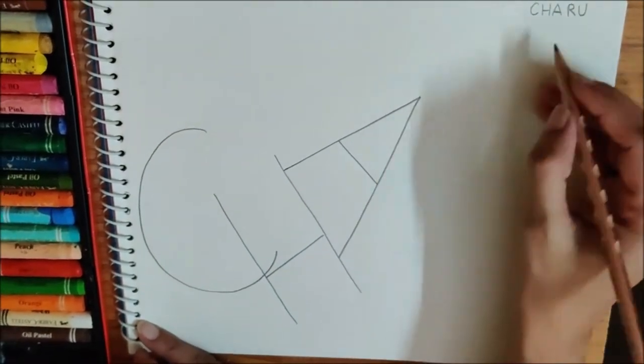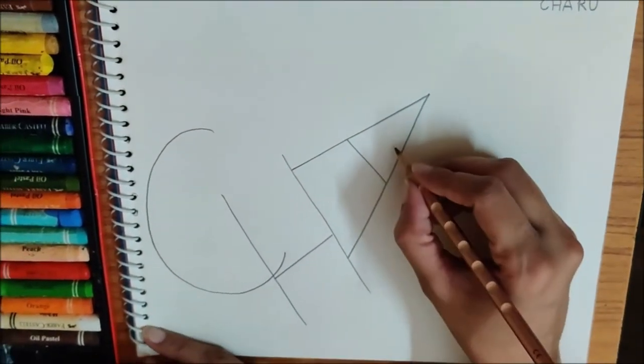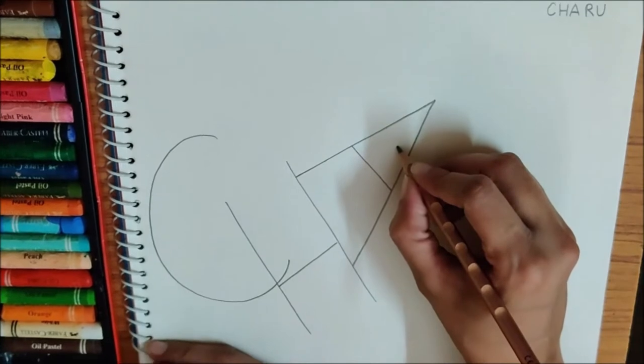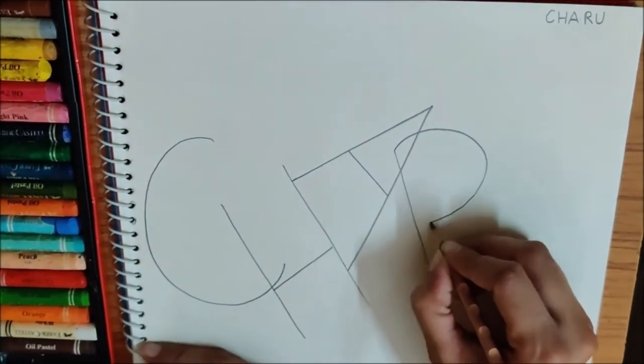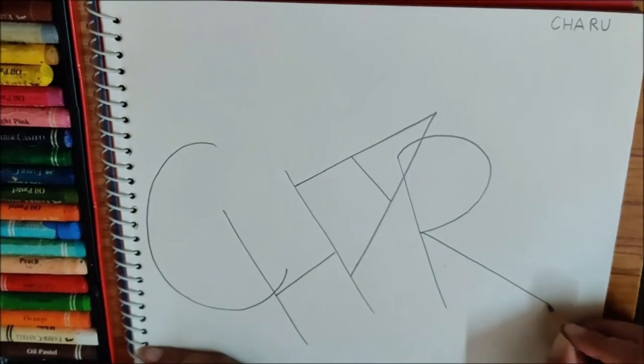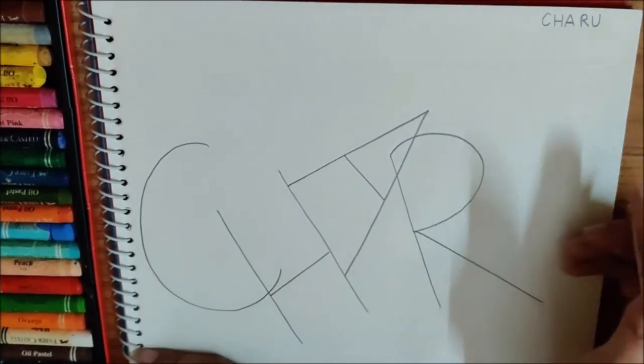Now, the next letter is R. And the last letter is U.